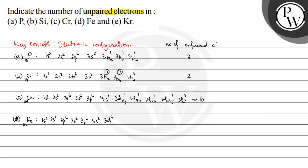If I expand 3d6, then this will be 3dxy2, 3dyz1, 3dzx1, 3dx2-y2 1 and 3dz2 1. So here total 1, 2, 3, 4. Four unpaired electrons are present.